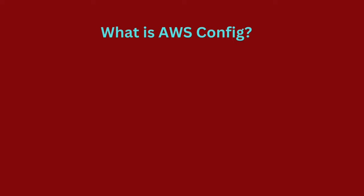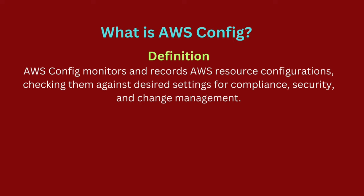AWS Config is a service that monitors and records how your AWS resources are configured. It continuously compares these configurations with your desired settings to provide visibility into their setup and relationship.